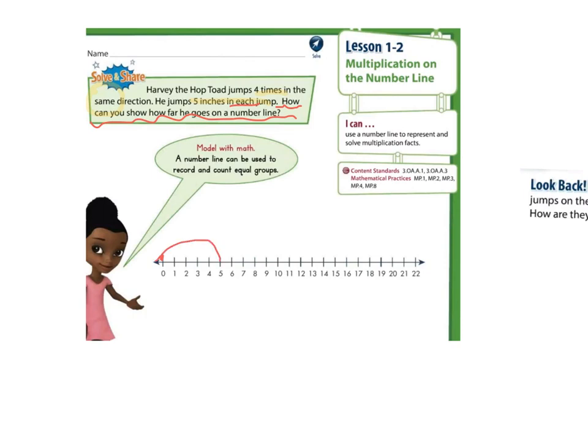There's one jump. Let's jump another five. There's two jumps. And another five. Three jumps. And five more. There's four jumps. What number did he land on? Twenty. So we have one, two, three, four jumps each of five inches with a total of 20 inches.